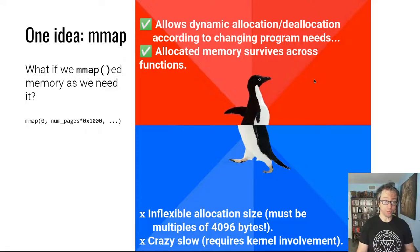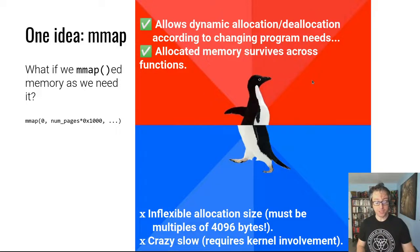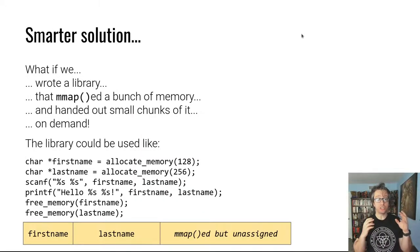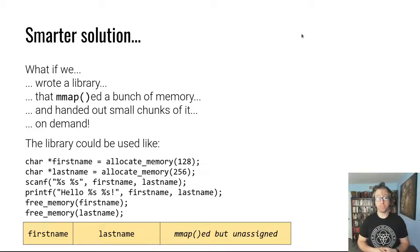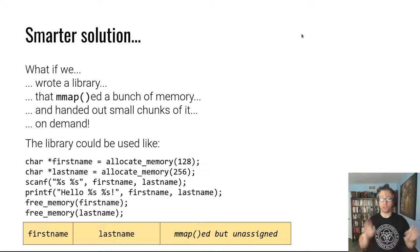We can get more clever: we don't need to memory map for every single small element. If an element is just 16 bytes, we don't have to allocate an entire 4096-byte page. We allocate that page once and slowly hand off pieces. We could write a library with an allocate-memory function — say, give me 128 bytes and get a pointer to it, then give me 256 bytes, and a function to say 'I no longer need this memory.' This is a dynamic allocator.